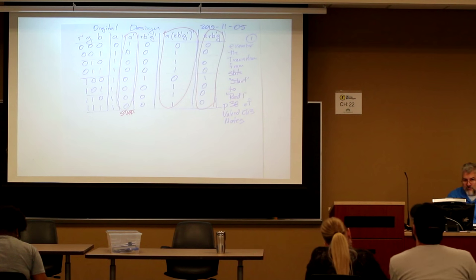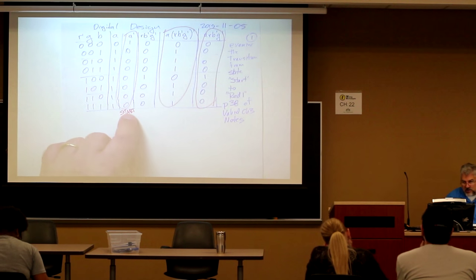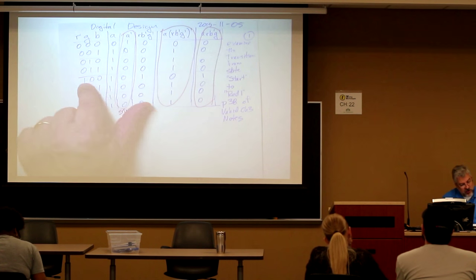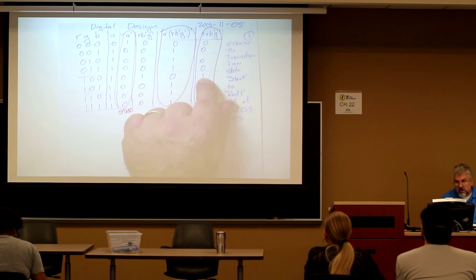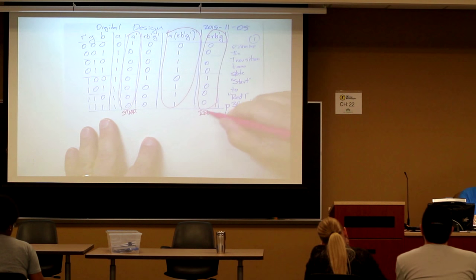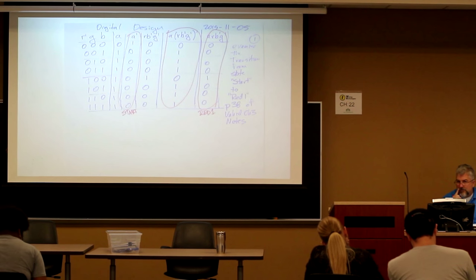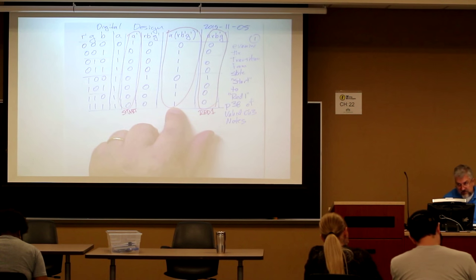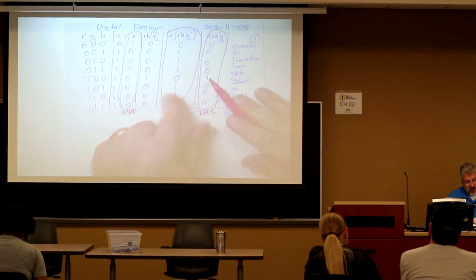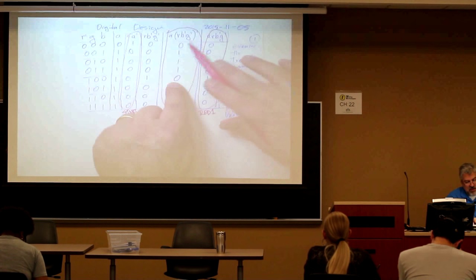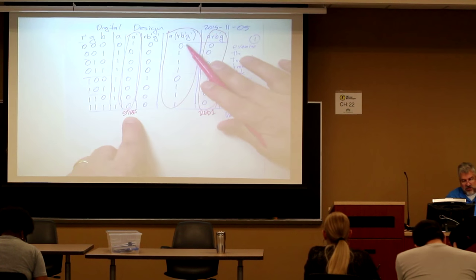If you're not pressing any button, you just go back to start. That's what the loop back to it was. If you press R and only R, so here you go, you're pressing R and only R, then you go to the state called red 1. Do you agree with that? Yes. And then this is everything else, which if you look at the table, oh look at this. Yes. This is the transition to red and this is the transition to stay in the start state.